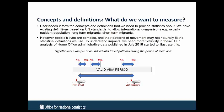One of the key areas of our research concerns concepts and definitions — what do we want to measure in our statistics system? User needs directly inform the definitions we need to provide statistics about. We already have existing definitions published based largely on UN standards that allow international comparisons — concepts like the usually resident population, long-term migration, and short-term migration. However, we know from our research that people's lives are complex and patterns of movement might not naturally fit the statistical definitions we're using, so we need more flexibility in some of our concepts and definitions.